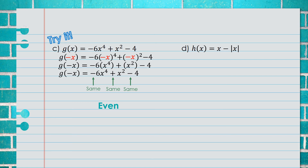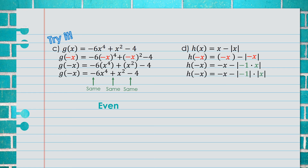For Example D, we have h(x) = x - |x|. Just like before, we plug in negative x for every x. What makes this problem different is that we are dealing with absolute value. Inside the absolute value we see negative x, which is the same as negative 1 times x. Since we have a coefficient times a variable, we can separate that into two absolute values: the absolute value of negative 1 times the absolute value of x.